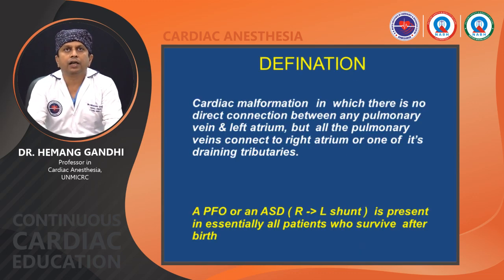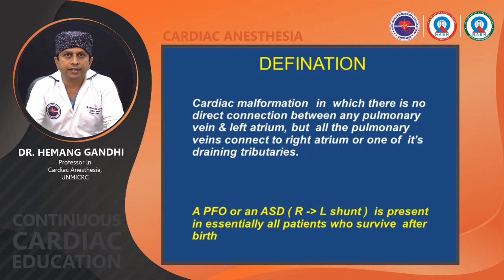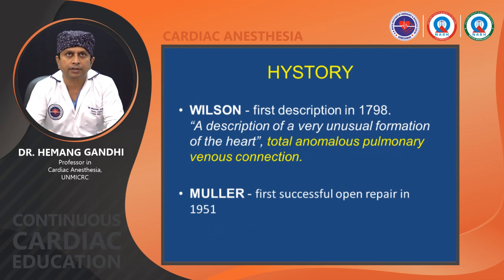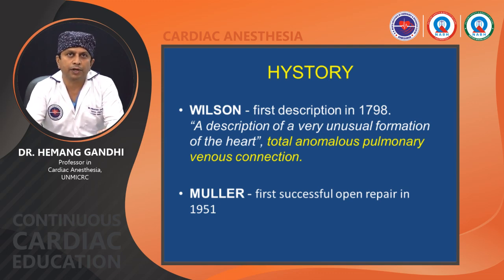By definition, TAPVC is a cardiac malformation in which there is no direct connection between any pulmonary vein and the left atrium, but all pulmonary veins connect to the right atrium or one of its draining tributaries. A PFO or ASD with right-to-left shunt is always essentially present in all patients who survive after birth. TAPVC was first described in 1798 by Wilson, and approximately 150 years later, Muller performed the first successful repair.